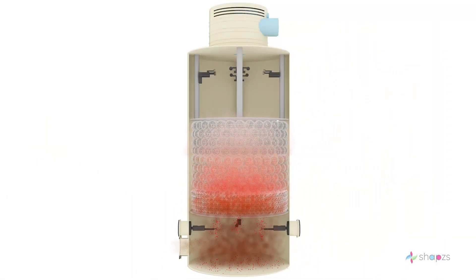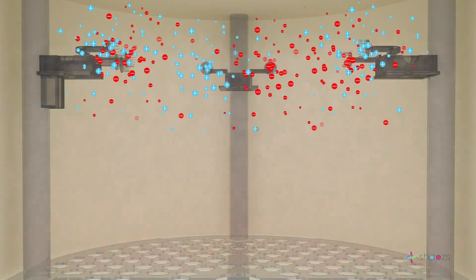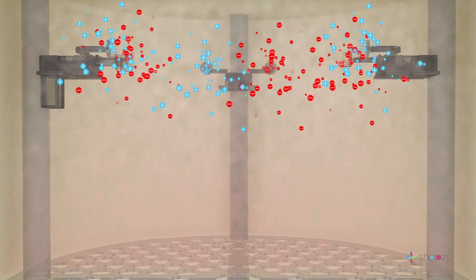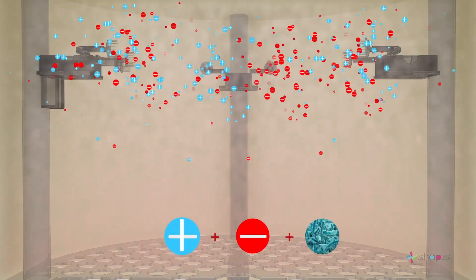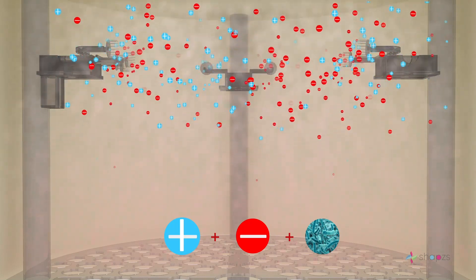The gases next reach the top portion where plasma generators positioned there emit both positive and negative ions. The ions combine with bacteria, organics and other pollutants, neutralizing them and completely eliminating them.